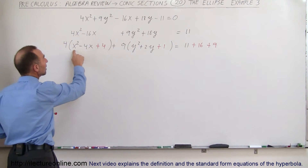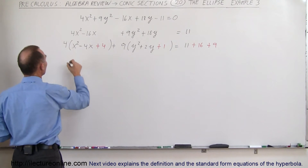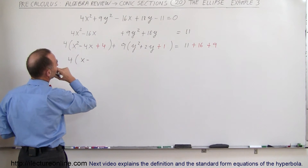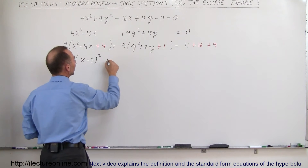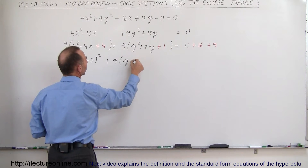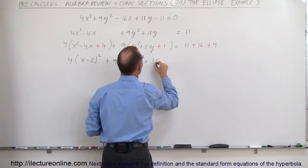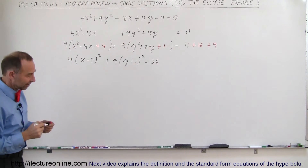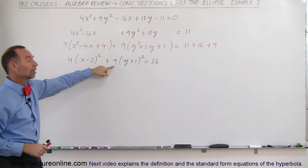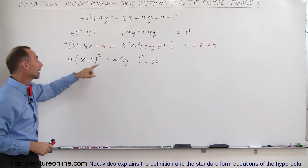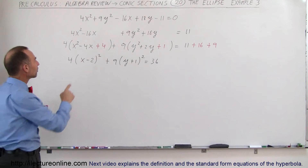Now we have perfect squares, so we can write each as a binomial squared. This simplifies to 4 times (x minus 2) squared, plus 9 times (y plus 1) squared, equals — adding everything together on the right — 11 plus 16 is 27, plus 9 is 36. Now I need to get rid of these two coefficients. If I divide by 4, I still have a coefficient other than 1 on the y side; if I divide by 9, I still have one on the x side.